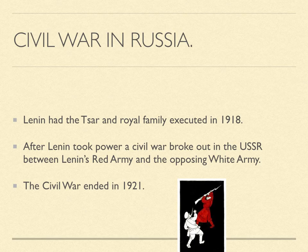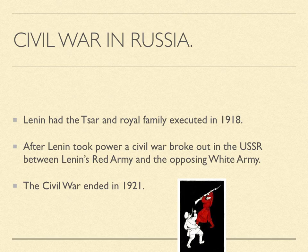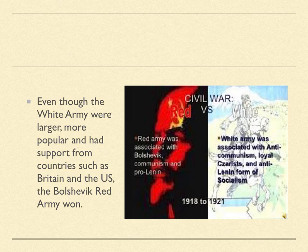In 1918 Lenin had Tsar Nicholas II and the Royal Family executed, and after Lenin took power a civil war broke out in the USSR between Lenin's Red Army and the White Army. The White Army were not as hardline socialists — they were people who wanted social reform but not necessarily the extremes the Bolsheviks were willing to go to. The White Army, known as the Mensheviks, were a collection of people with different political ideals, whereas the Red Army believed in the Bolshevik message. Even though the White Army were larger and more popular, with support from countries such as Britain and the US, the Bolshevik Red Army won.